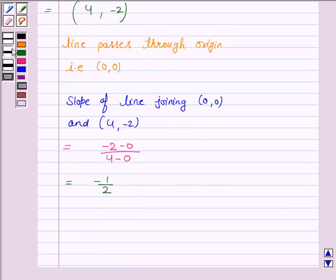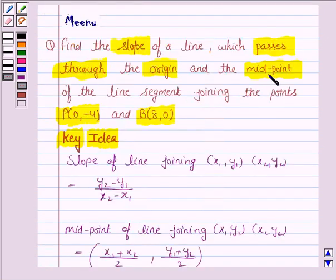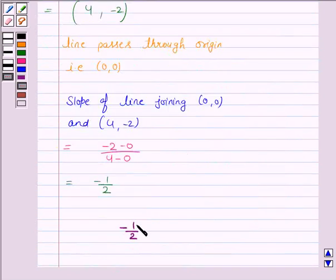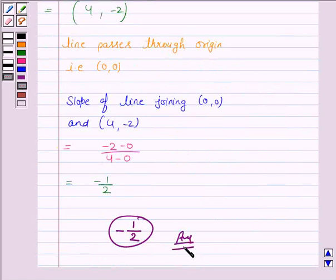Hence, the slope of the line passing through the origin and the midpoint of the line segment joining these two points is -1/2. So this completes the question. Hope you enjoy this session. Goodbye and take care.